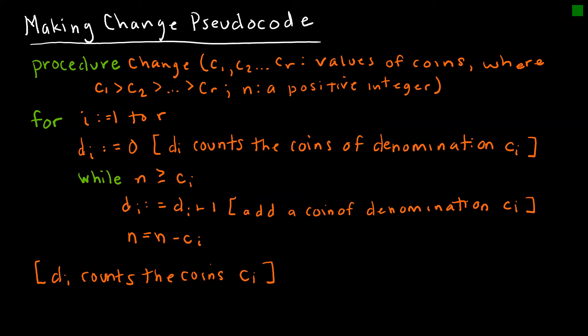Let's take a look at the pseudocode for making change. Here we're saying we've got some denominations of coins where C1 is the coin with the highest denomination. So in our example, this would be the quarter, this would be the dime, nickel, penny, etc. So we're saying from I, the subscript equaling 1 to R, D sub I equals 0, which means it counts the denomination of C sub I. So while N, the amount that I owe you is greater than C sub I, I'm going to give you one of those denominations. So a quarter, a quarter, a quarter, etc.